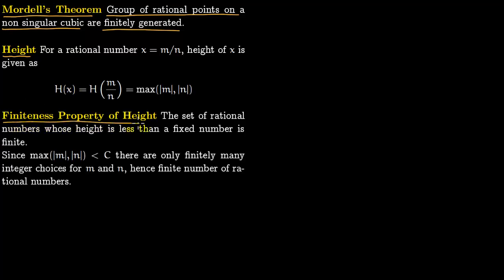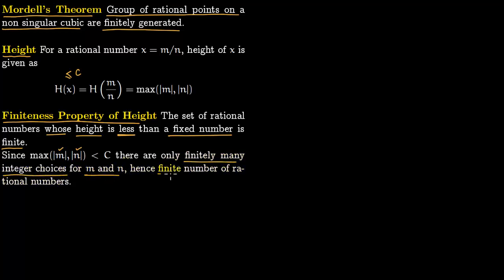The first thing to notice about this height is that there is a finiteness property. The set of rational numbers whose height is less than a fixed constant C is finite. This is easy to see: both absolute values are positive integers, and there are only finitely many ways to choose M or N because they are bounded above and below. So there are only finitely many integer choices for both M and N, and therefore only finitely many rational numbers constructible from them.